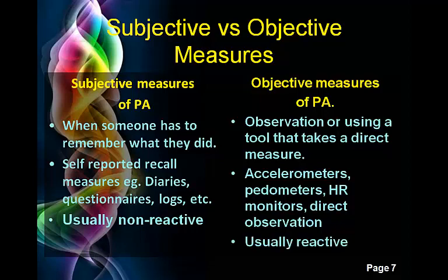Direct observation involves someone sitting on the sidelines of your game or sport class and watching how much activity people do. Again, having that person there tends to stimulate you and make you think you should be doing a bit more activity.